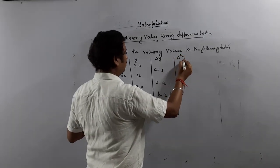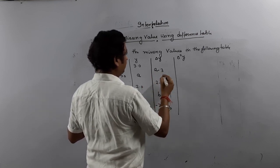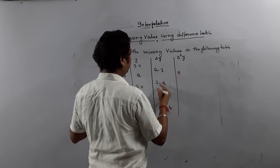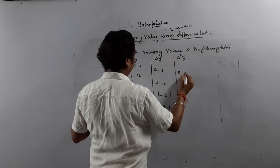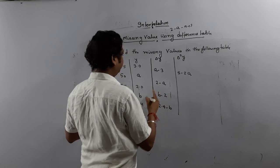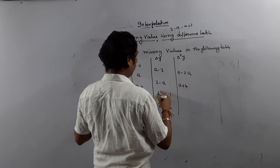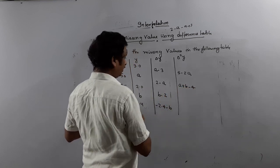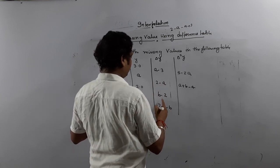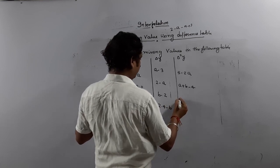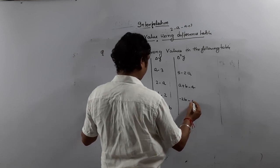Now we are going to calculate del squared y. What is this? The difference of these two: 2 minus A minus A plus 3, so 3 plus 2 equals 5. Here: 2 minus A minus A plus A, so 5 minus 2A. What is the next difference? So A plus B minus 4. B minus 2, minus 2 plus A. And the last difference: minus 2B minus 0.4.